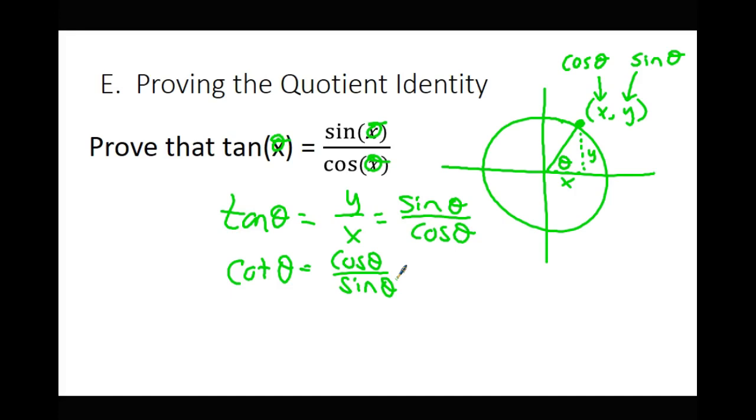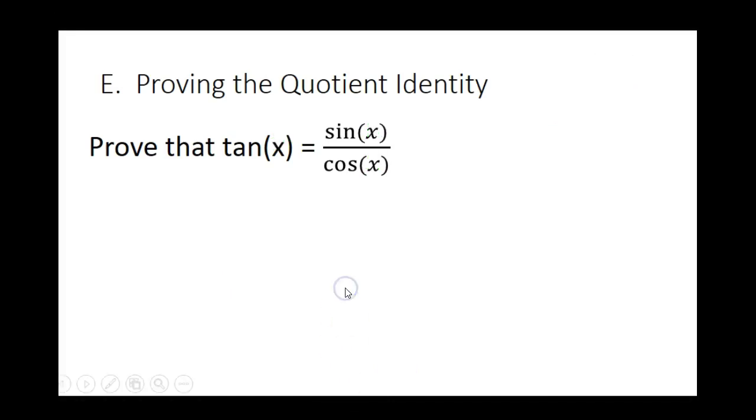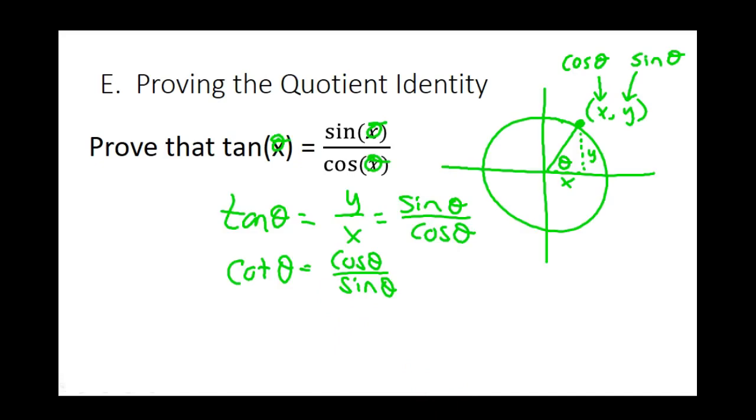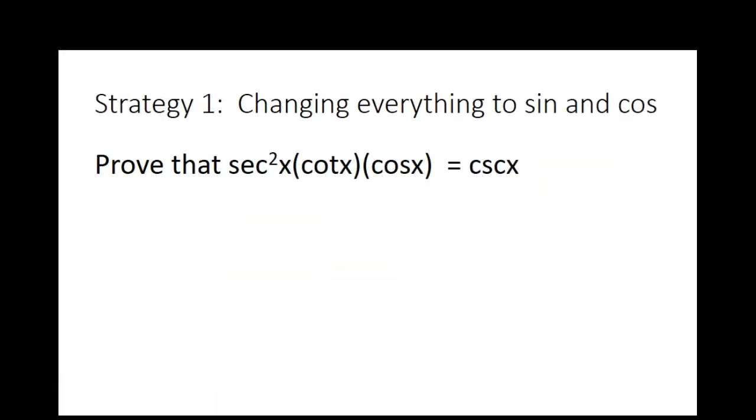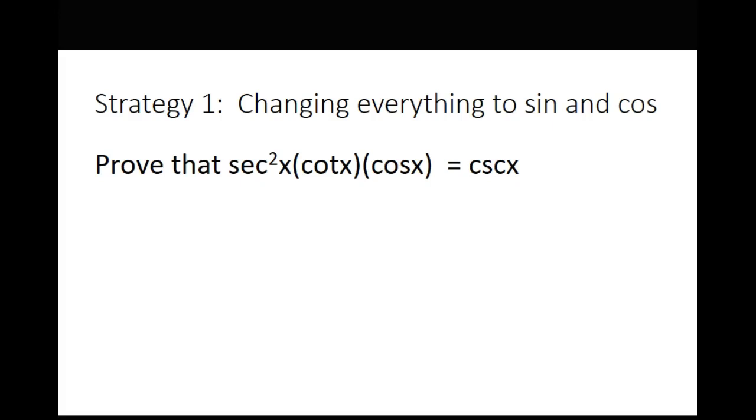We're going to be spending the day using the reciprocal and quotient identities to simplify expressions. That's the goal. I don't see pencils moving, so I think we're okay. Go ahead and copy down this one. Now, I'm calling this strategy one, but it's really example one. So this is example one, but I'm calling it strategy.